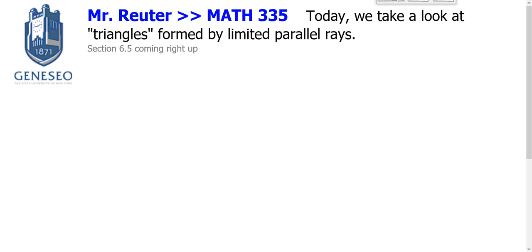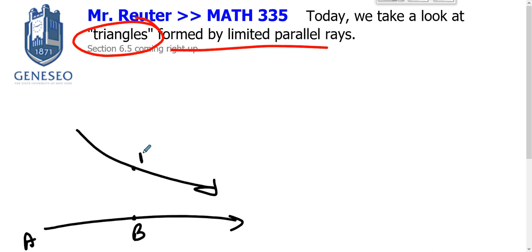Let's take a look at triangles formed by limiting parallel rays. Consider the picture that should now be painfully familiar: you've got a segment PA, a ray AB, and a ray PD. Now let's draw this out to its logical conclusion. These two rays get asymptotically close to each other.